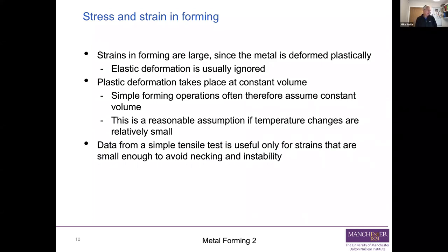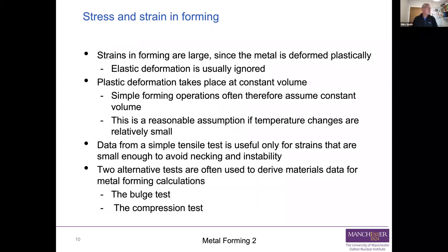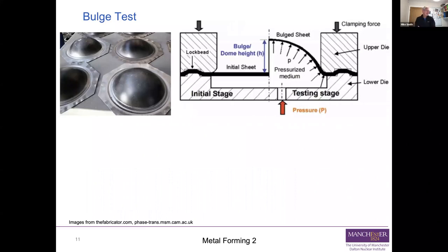We then have a problem: data from a simple tensile test is only useful for strains small enough to avoid necking and instability. So we use two alternative tests to derive materials data for metal forming calculations: the bulge test and the compression test. Let's look at the bulge test.